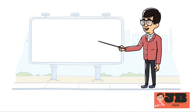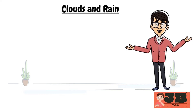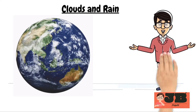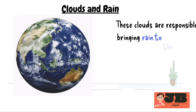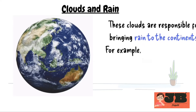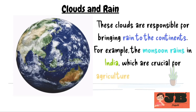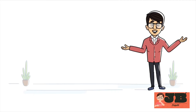Next, let's understand about oceans and disasters. First, let's discuss clouds and rain. When looking at a picture of Earth, you might notice white shapes covering parts of the globe. These are large masses of clouds, which are responsible for bringing rain to the continents. For example, the monsoon rains in India, which are crucial for agriculture and life, originate in the ocean.